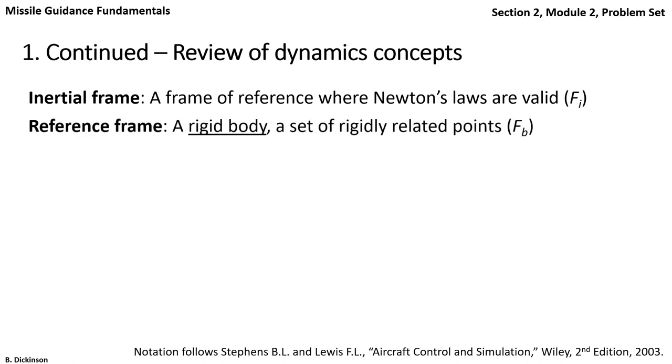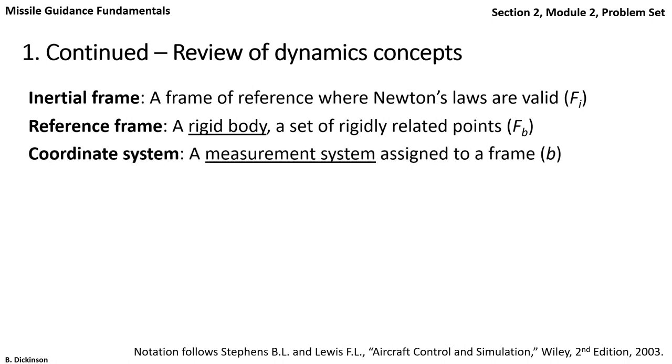A reference frame is a rigid body or a rigidly related set of points. Here we have the body reference frame denoted Fb. A coordinate system is a measurement system assigned to a frame. We assigned the B coordinate system to the frame Fb of the pursuer.